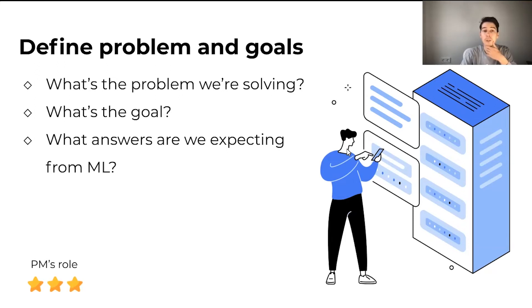And then you need to think about what are the answers we are expecting from ML. In our example, it could be either binary, either a cat or a dog. Or it could be a value from zero to one, where if it's closer to zero, it would mean that it's probably a cat. And if it's closer to one, it would mean that it's probably a dog.